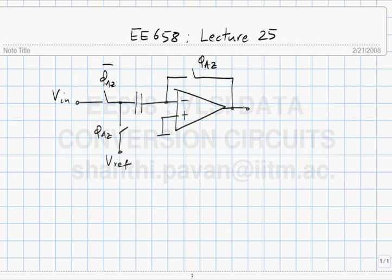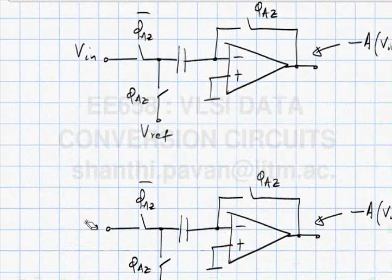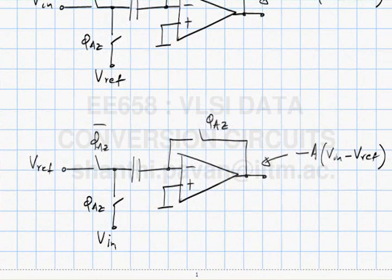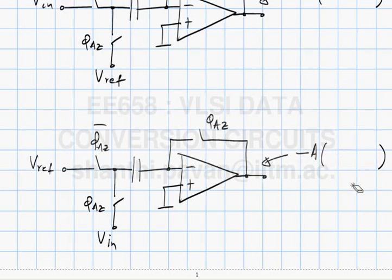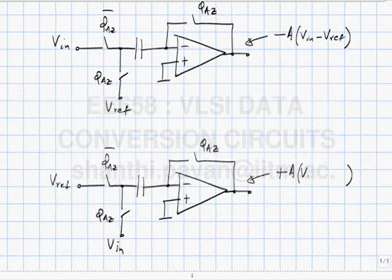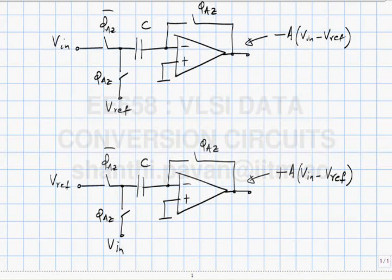As we saw yesterday, the capacitor stores not only the reference but also the offset of the preamp. Then we said this is supposed to produce during phi AZ bar, so what is the output of the preamplifier? Minus A times V in minus V ref. It is V in minus V ref. If I interchange the roles of V in and V ref, I should get, if I just replace V ref and V in, then I will get both of these seem to be reasonable solutions.